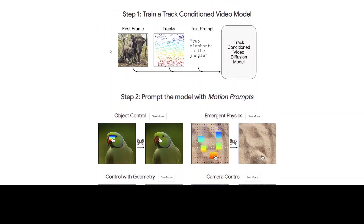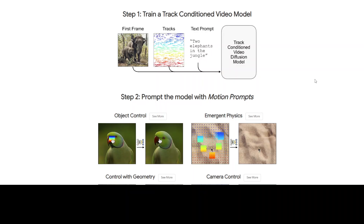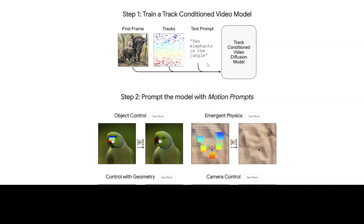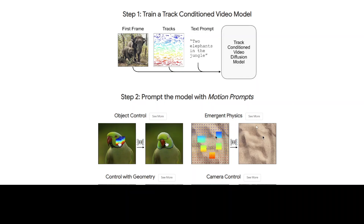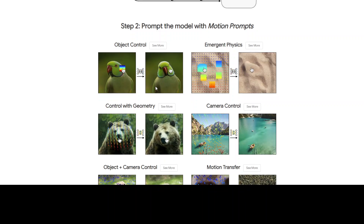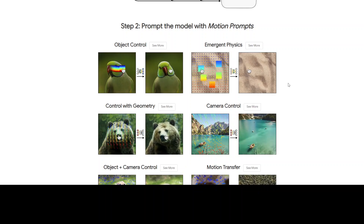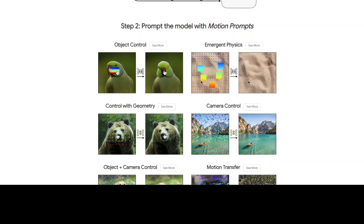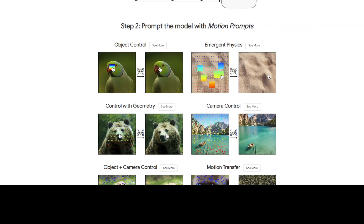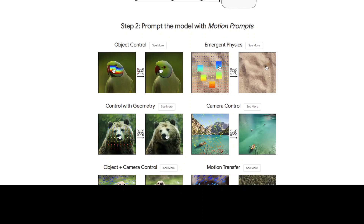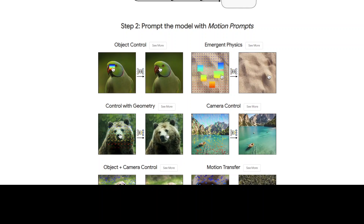In the first step, we have the first frame, then we go through the tracks, and it is guided through the text prompt. For example, in this example it says 'two elephants in the jungle,' and then the track condition video diffusion model takes in the prompt. The model works with a motion prompt, with object control on the left-hand side and physics on the right-hand side.